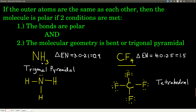For example, in ammonia, the outer hydrogen atoms are all the same. The difference in electronegativity is 3.0 for nitrogen minus 2.1 for hydrogen, which equals 0.9 — so the bonds are polar. Drawing the Lewis structure, the central atom has four electron groups with one lone pair, making it trigonal pyramidal. Both conditions are met, so ammonia is a polar molecule.